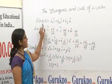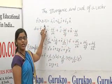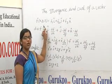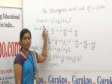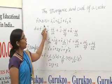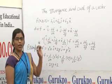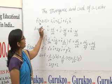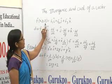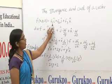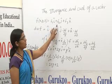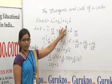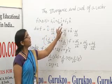Let f of x, y, z be a continuously differentiable vector point function of the coordinates x, y, z. Let f(x, y, z) be equal to f1 i-cap plus f2 j-cap plus f3 k-cap.